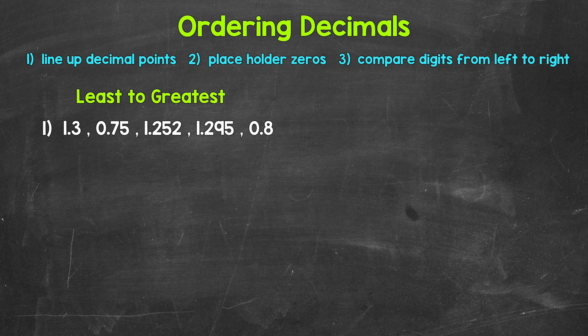Let's jump into number one, where we need to order the decimals from least to greatest. The first thing we're going to do to help us order these is line them up off to the side, and we're going to line up the decimal points. This is going to line up all of the places. So let's line up all of these right here.